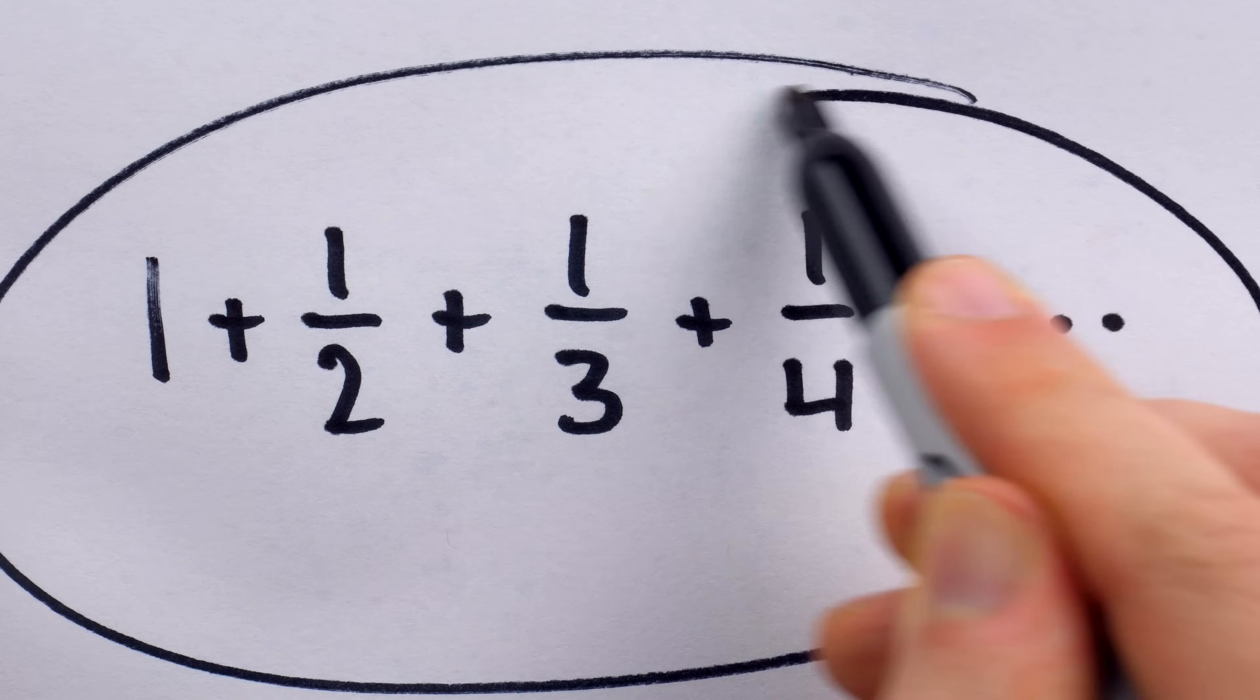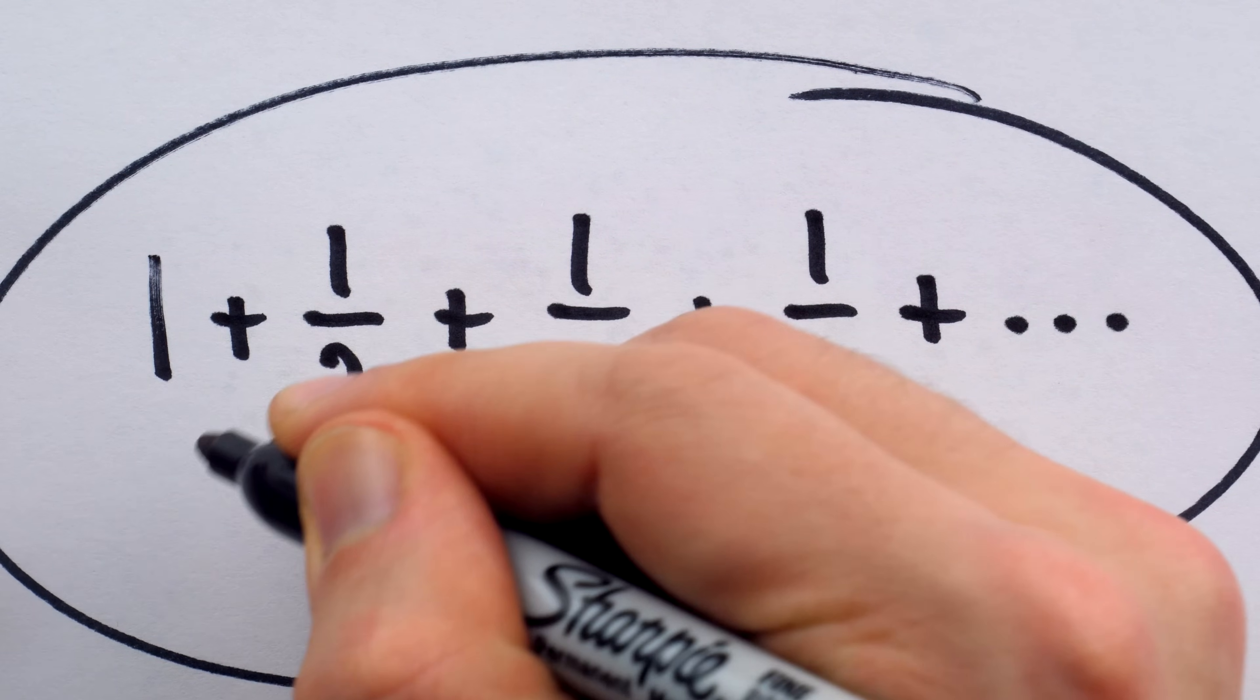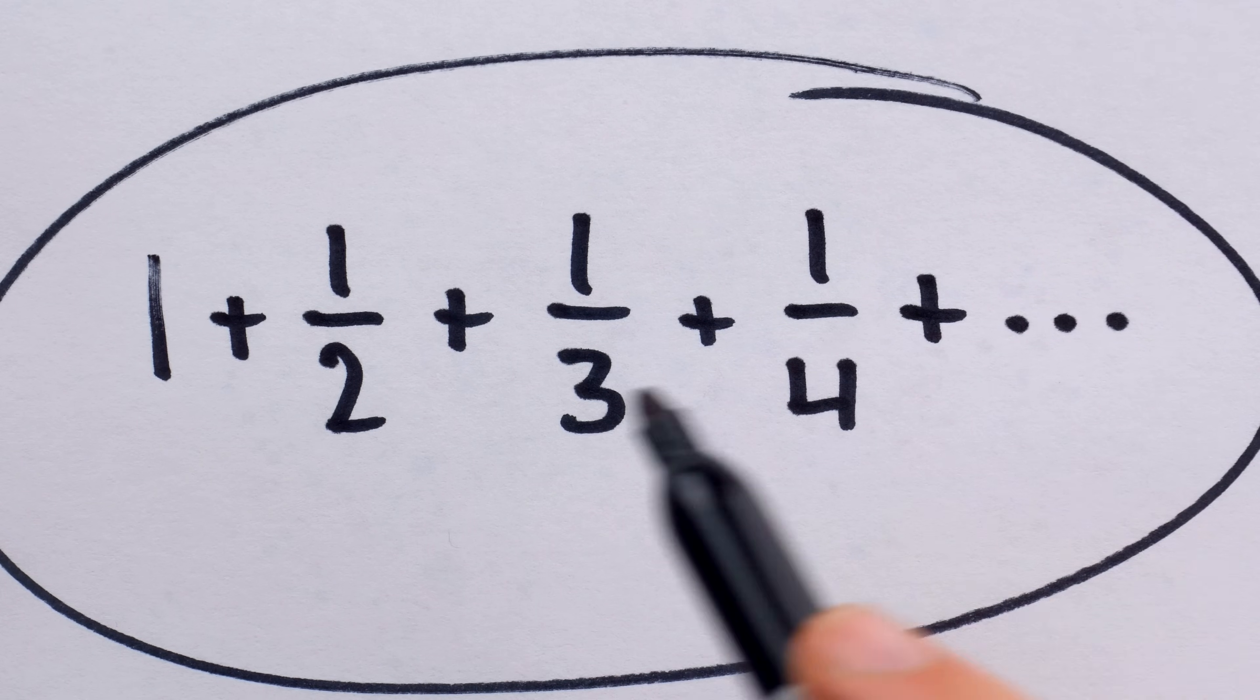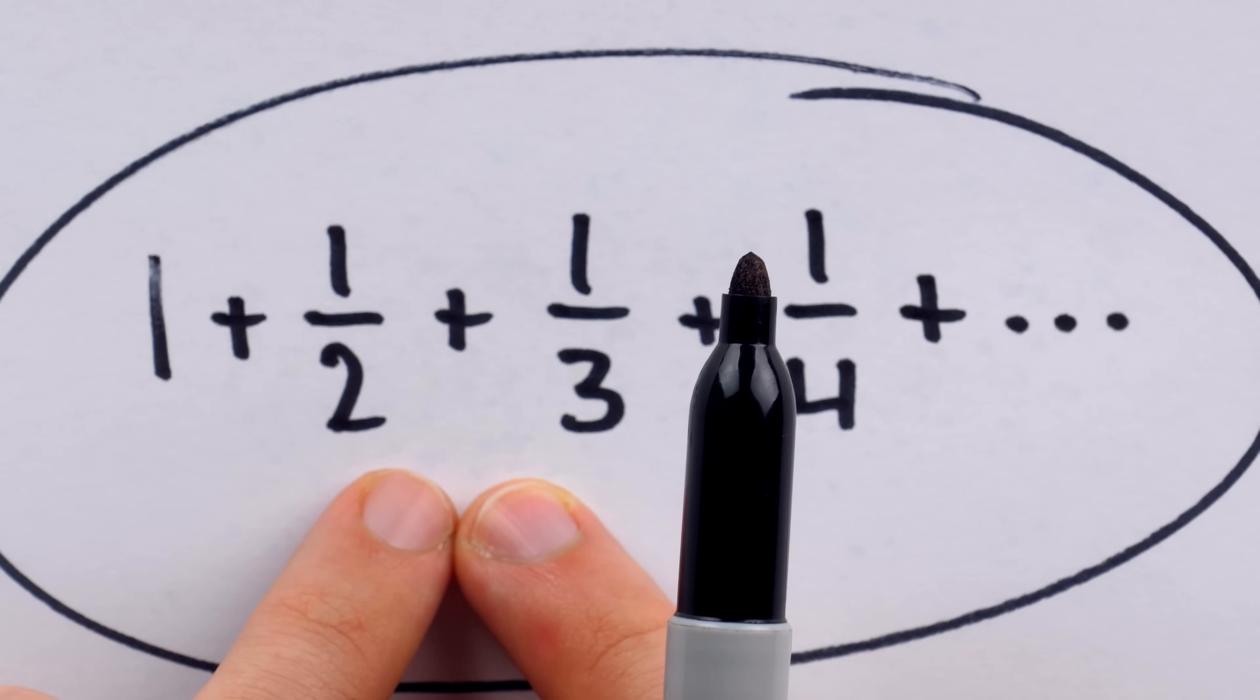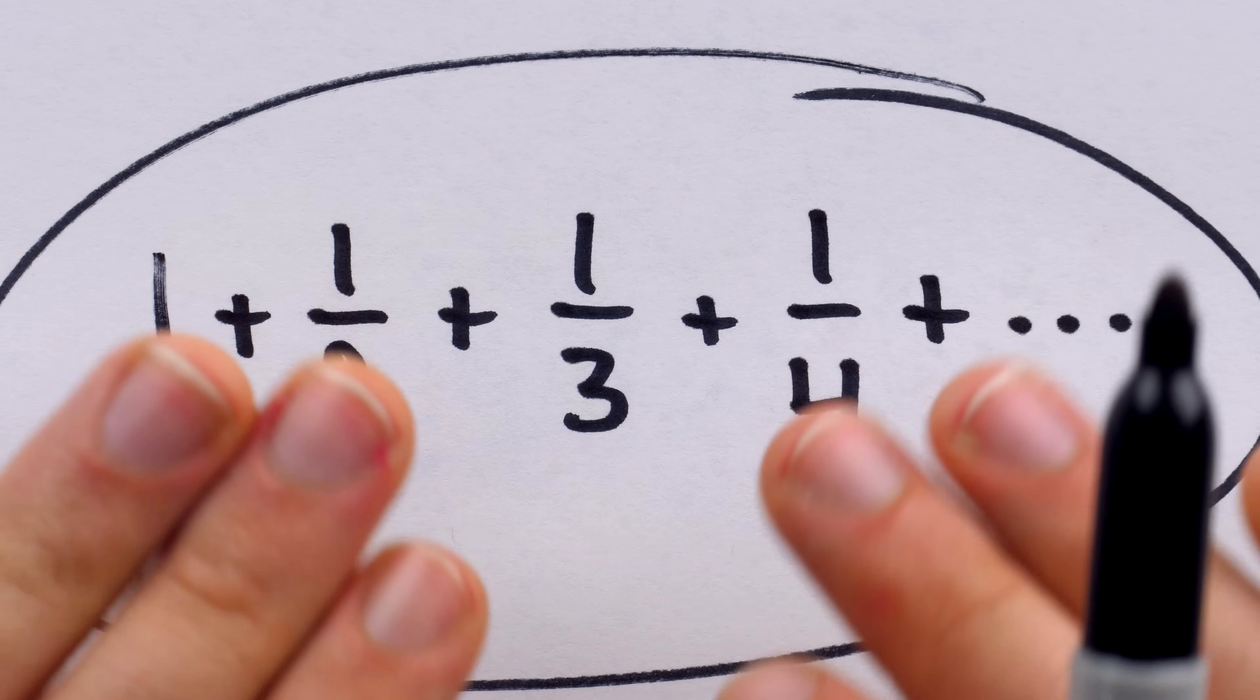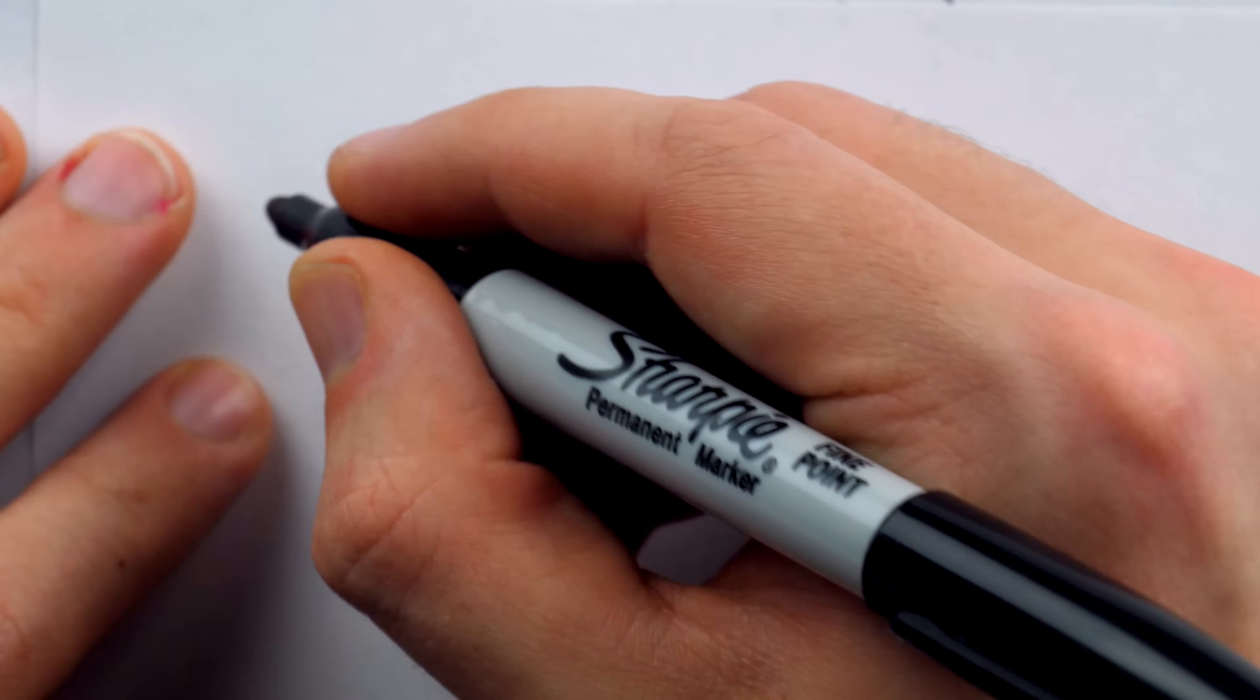Here's an example of a famous series called the harmonic series. It's 1 over 1 plus 1 over 2 plus 1 over 3 and so on. And this series grows to infinity. It doesn't approach a single number. It, in fact, gets arbitrarily large. But it does it super, super slowly.